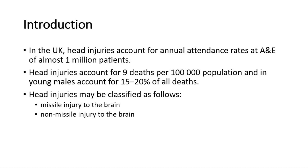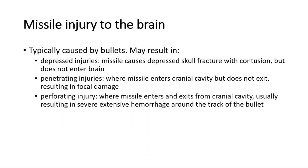Head injuries may be classified as missile injury to the brain or non-missile injury to the brain. Missile injury to the brain is typically caused by bullets. This may result in depressed injuries, where the missile causes a depressed skull fracture with contusion but does not enter the brain. Penetrating injuries, where the missile enters the cranial cavity but does not exit, resulting in focal damage. Perforating injury, where the missile enters and exits the cranial cavity, usually resulting in severe extensive hemorrhage around the track of the bullet.